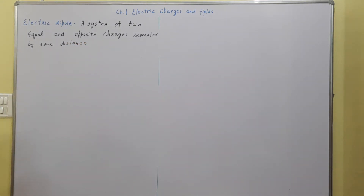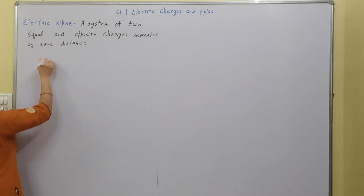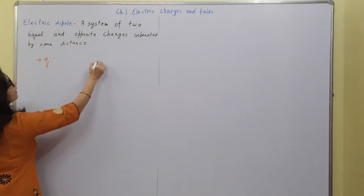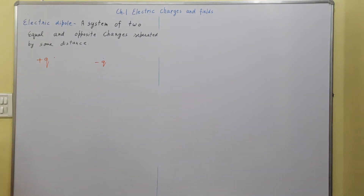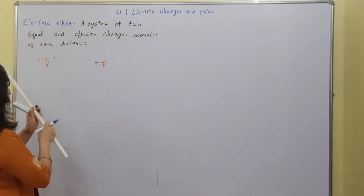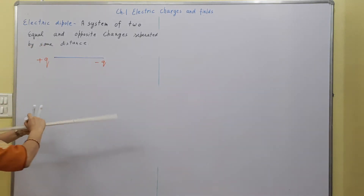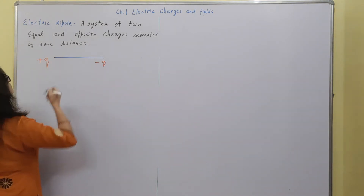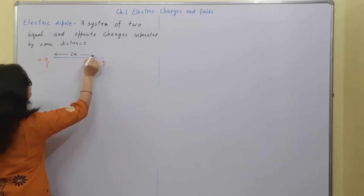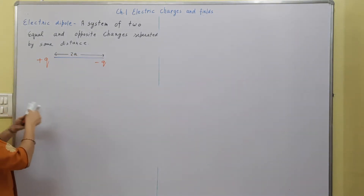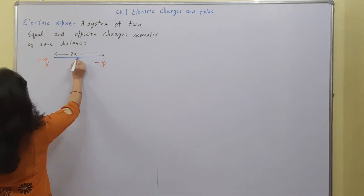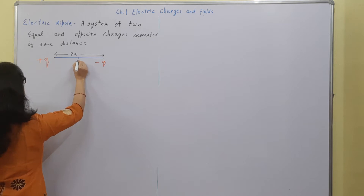If we have plus q charge here and minus q charge here, separated by a distance 2a, then 2a is called as the length of the dipole, and the center of the dipole is here.